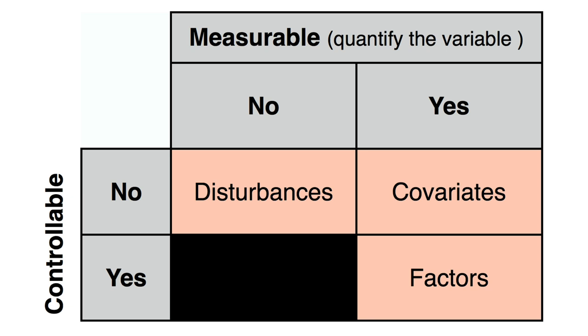We are generally comfortable with the idea of control in our experiments. Variables that we can control should be controlled. Remember that idea that you should always keep everything fixed and only change what you're experimenting with? The idea of keeping things fixed is what we mean by the term control.